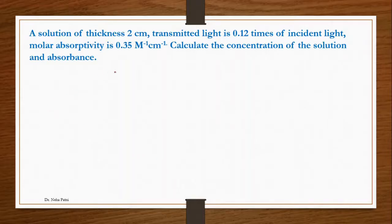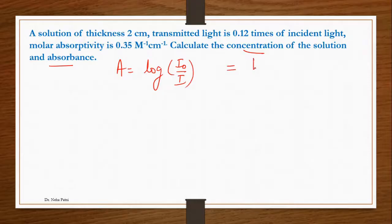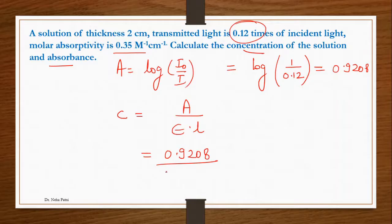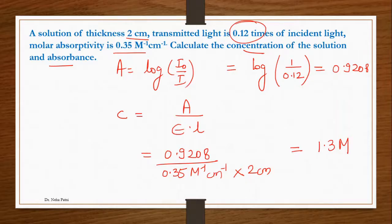In the next question the solution has a thickness of 2 cm, and the transmitted light is 12% of the incident light, meaning I = 0.12 × I₀. Find the absorbance and concentration given ε = 0.35 M⁻¹ cm⁻¹. Absorbance A = log(I₀/I) = log(1/0.12) = 0.9208. Then C = A/(ε·L) = 0.9208 / (0.35 × 2) = 1.3 molar.